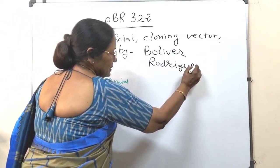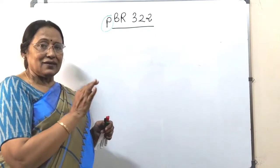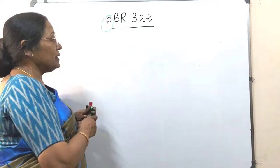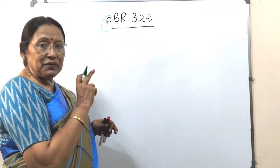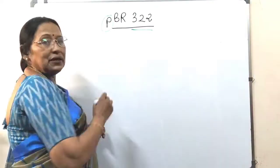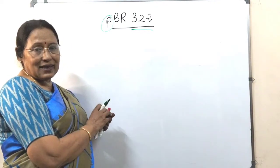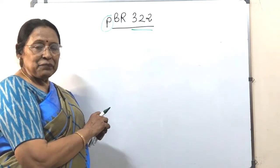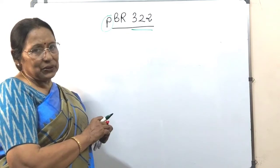So PBR 322 is the first artificial cloning vector, which the P stands for plasmid, B for Bolivar and R for Rodriguez. This 322 is a number given to identify this artificial cloning vector from other vectors which were prepared in the same institute.